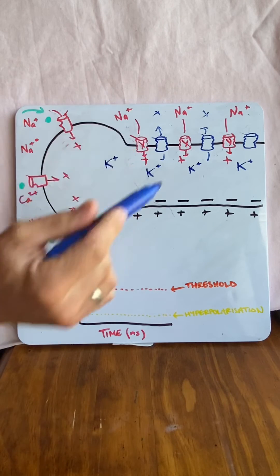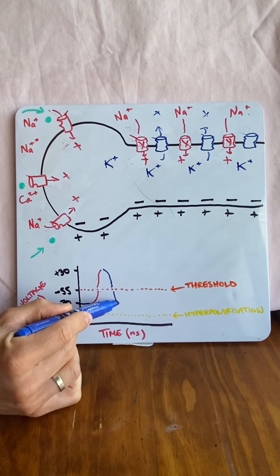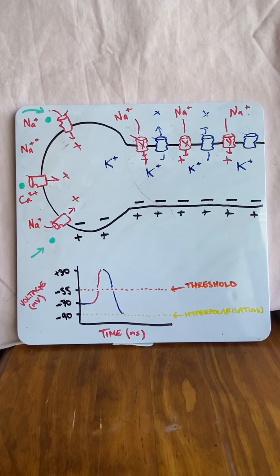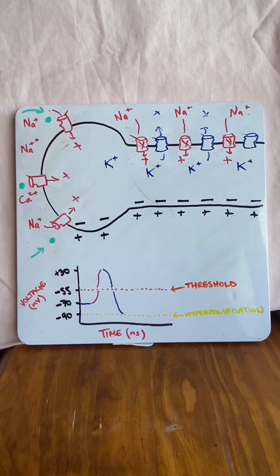Now, if enough positive potassium moves out, it can go below negative 70, go to negative 90, and this is called hyperpolarization, and this allows for another signal not to be sent. We need to reset all this. How do we do it? With sodium-potassium ATPase pumps.